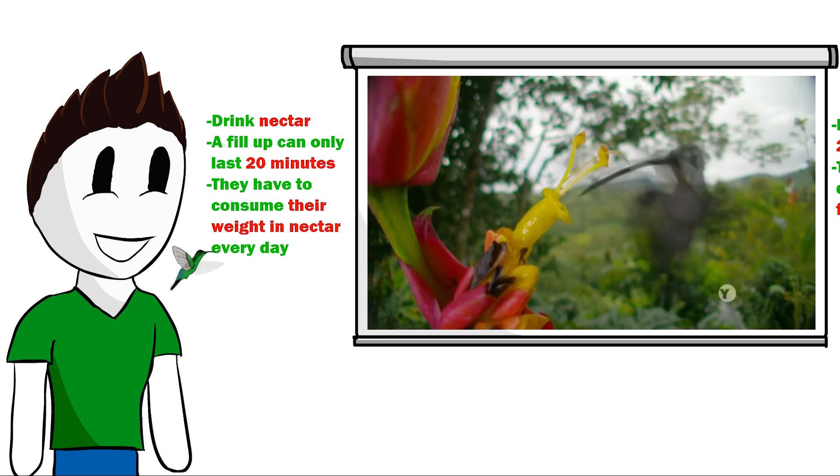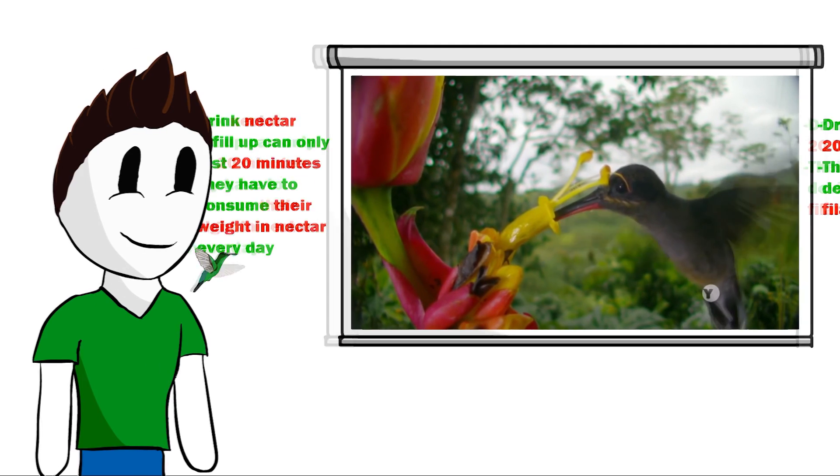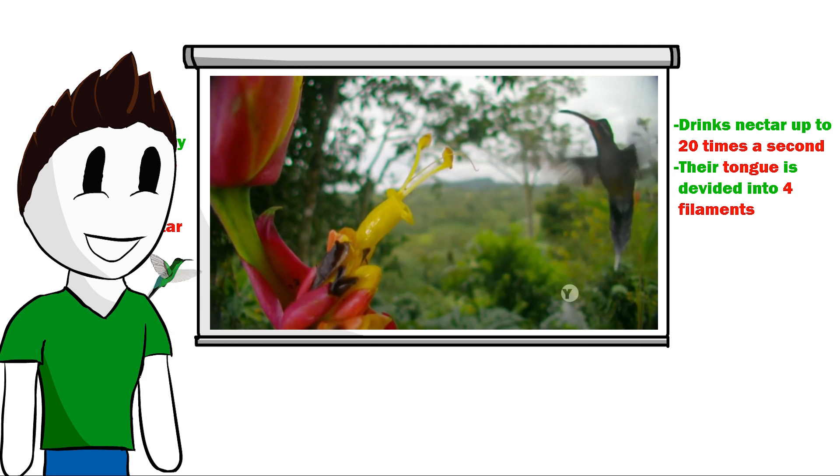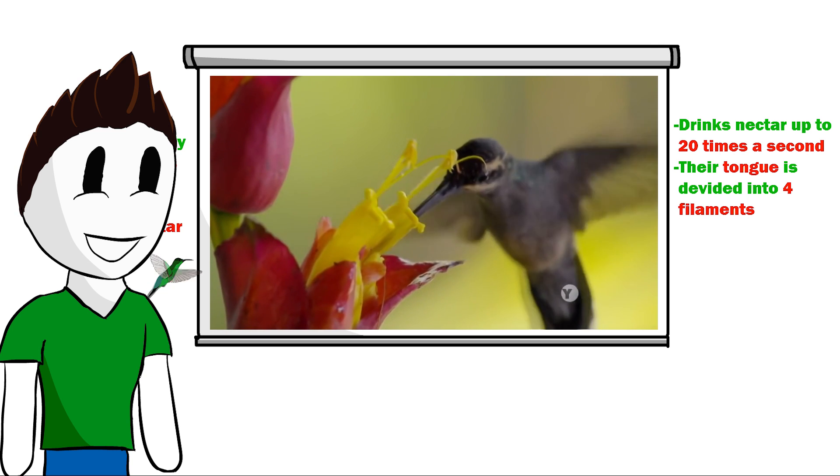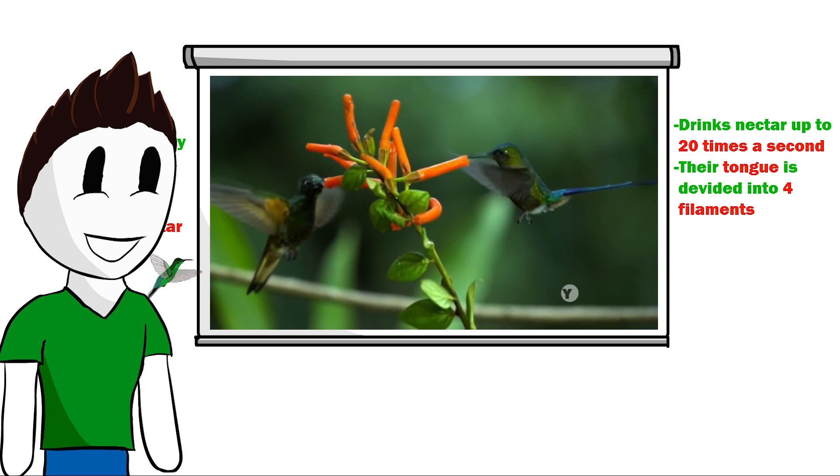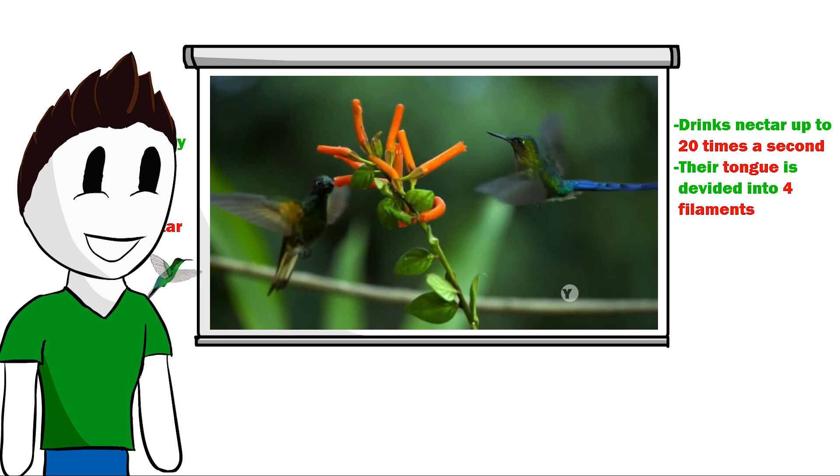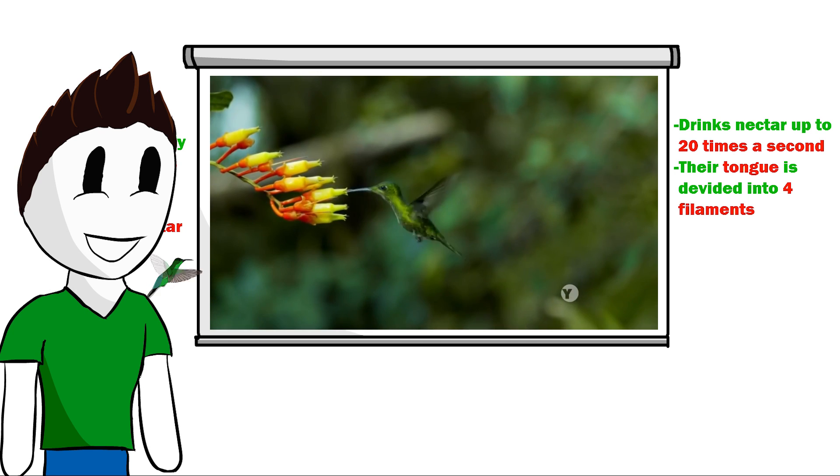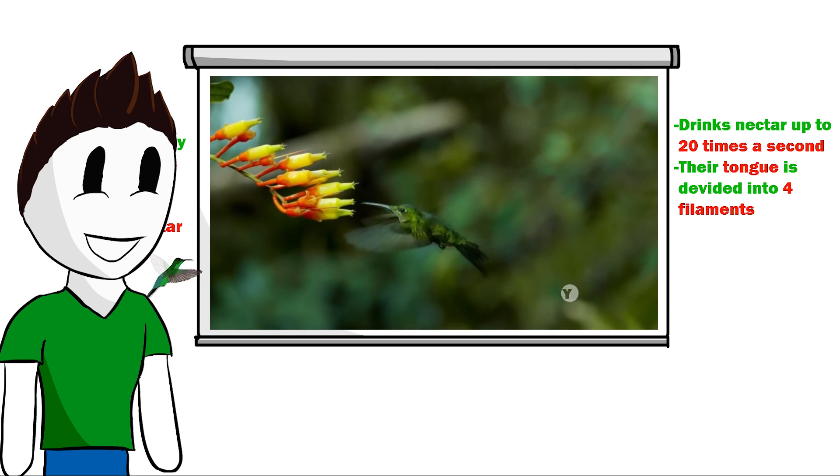Hummingbirds have to consume their weight in nectar every single day. Plants need them because hummingbirds visit lots of flowers every day, transporting pollen so that flowers can reproduce. That's why most flowers are colorful and have the perfect shape for the hummingbird's long, thin beak. The hummingbird uses its hovering ability and inserts the beak into the flower, drinking nectar up to 20 times a second.